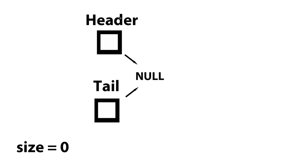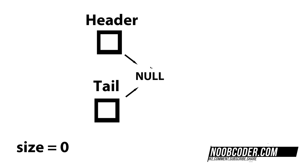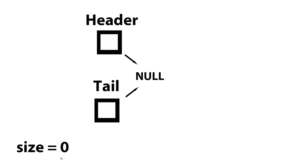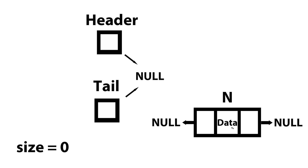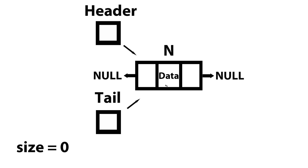Our first case is when the list is empty. We need to check whether the list is empty — we could do so by saying if the header is equal to null, or if the size is equal to zero. The first step is to create the new node we want to append. The second step is to have both the header and tail pointers point to the newly created node, since it's the only node in the list. The last step is to increment the size.